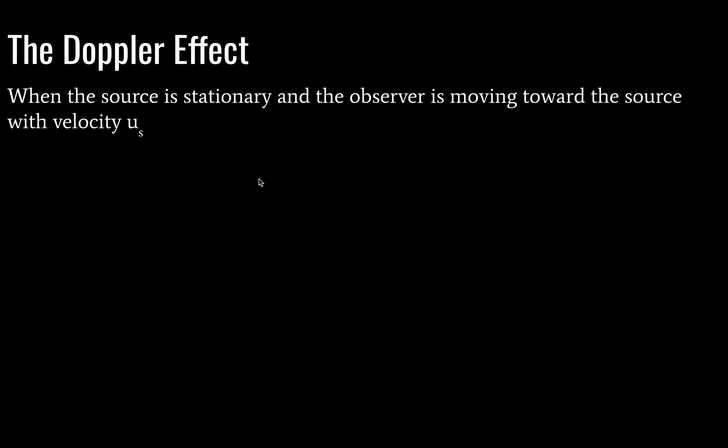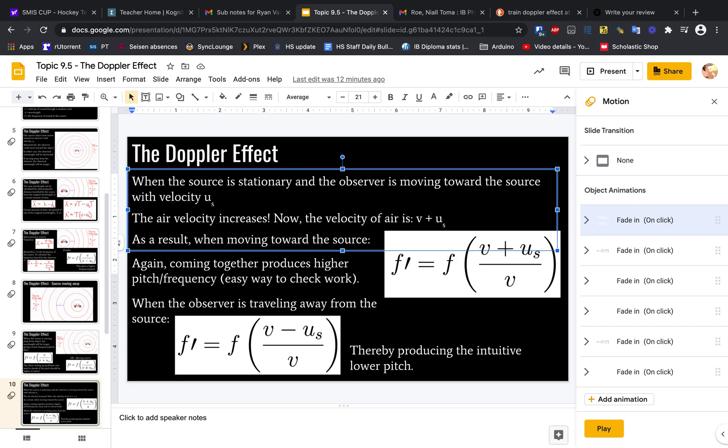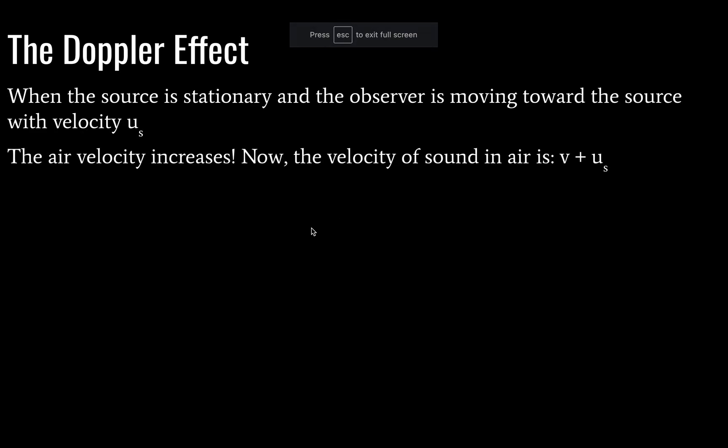So let's imagine we have a stationary source, and the observer is moving toward the source with that velocity, u sub s. Now in this case, we're actually increasing the velocity of sound in air. The velocity of sound in air. And actually, I need to adjust this slightly. There we go. Oh, such professional. Okay, so now our velocity of sound in air is going to be the normal stationary velocity of sound in air, plus the velocity of the moving observer. Okay, note that we have redefined u sub s. And so you need to be careful, as always, to define your variables in IB physics very, very carefully.